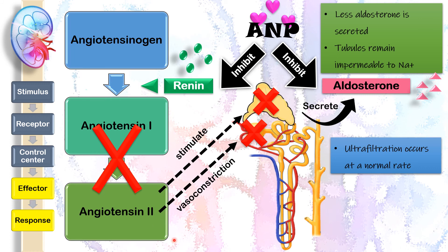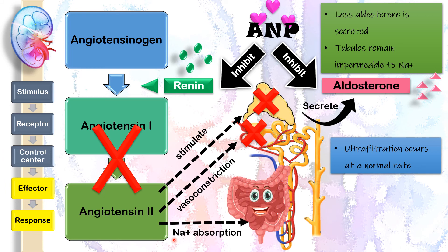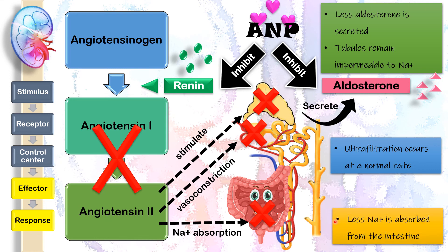The third role of angiotensin 2 was to promote sodium ion absorption from the intestines into the blood. Now, without angiotensin 2, sodium ion absorption will not occur. So less sodium will enter the blood from the intestine, and the excess sodium will be excreted along with faeces.